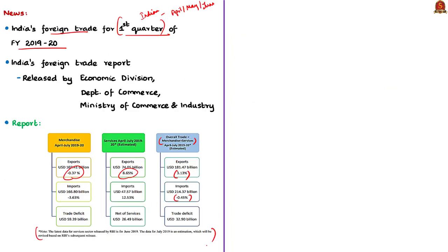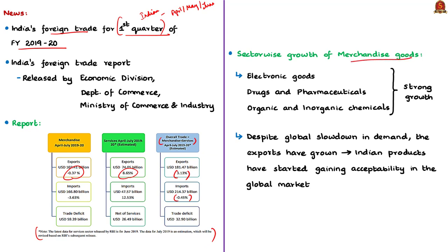The services data for July month in this report is an estimation and will be revised next month when the Reserve Bank of India releases the final actual figures. The news article also mentions sector-wise growth of certain merchandise goods. Sectors that saw strong growth in exports in July 2019 compared to July 2018 are: electronic goods with a growth of 51.39%, then drugs and pharmaceuticals, then organic and inorganic chemicals, and then ready-made goods of all textiles.